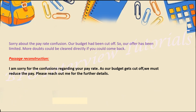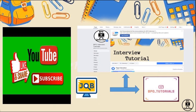This example reads: 'Sorry about the pay rate confusion. Our budget has been cut, so the offer has been limited. More doubt could be cleared directly if you could come back.' Main points: no possibility of discount, budget has been cut, and due to confusion in pay rate you cannot receive a refund directly — you have to come back to the office or store. Reconstruction: 'I am sorry for the confusion regarding your payroll. As our budget has been cut, we must reduce the pay. Please reach out to me for further details.'